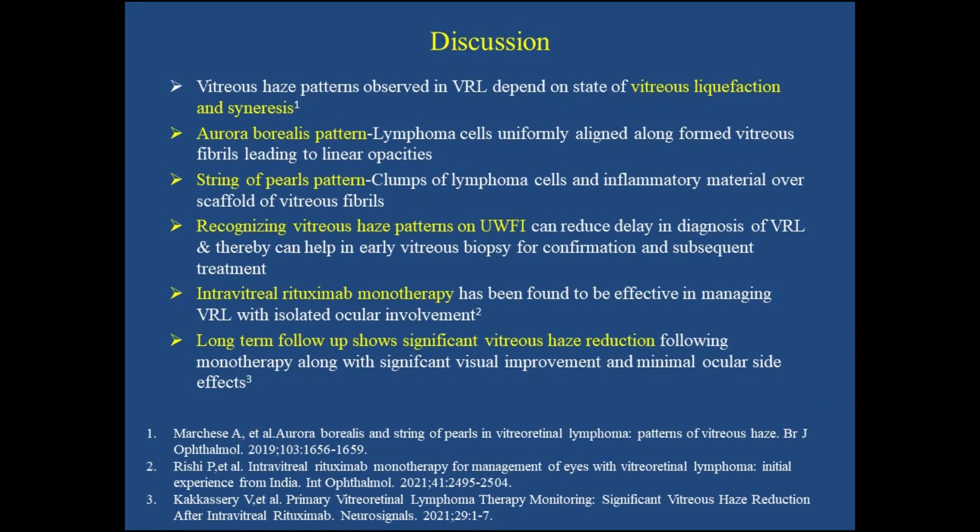Vitreous haze patterns seen on UWF imaging in vitreo-retinal lymphoma depend on the state of vitreous liquefaction and syneresis. Lymphoma cells accordingly align in linear opacities or clumps. Recognizing these patterns can reduce delay in diagnosis of VRL and help in early treatment.